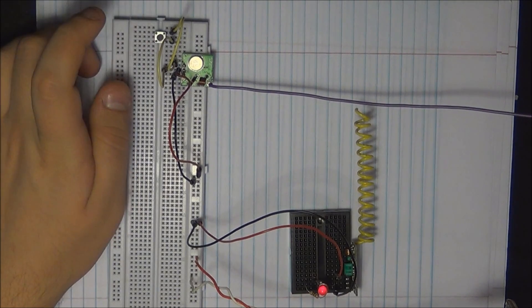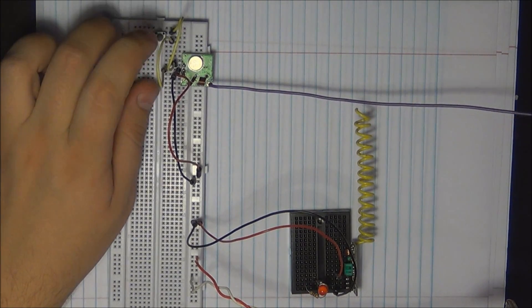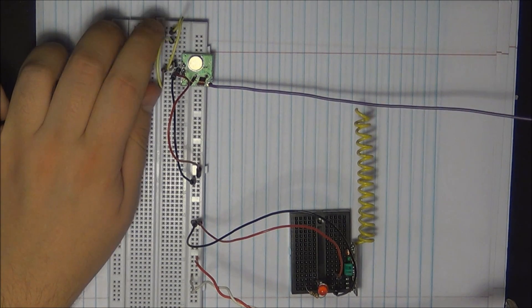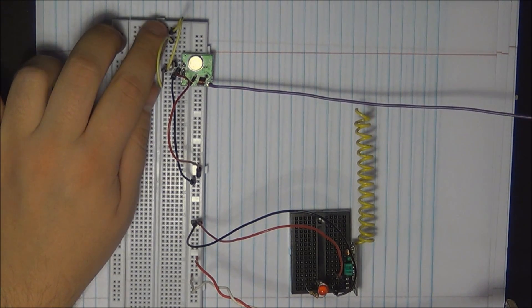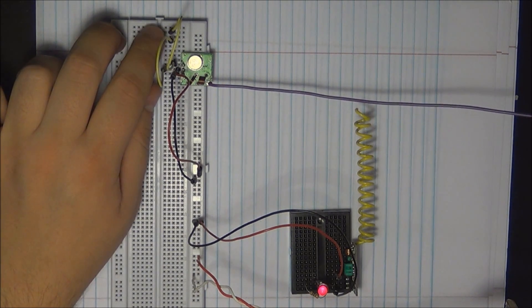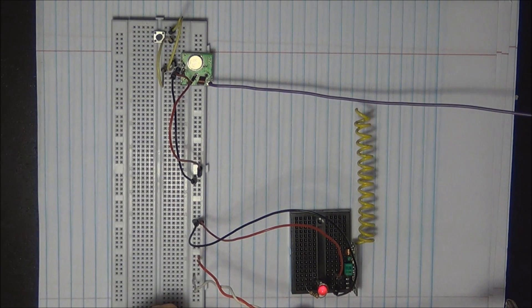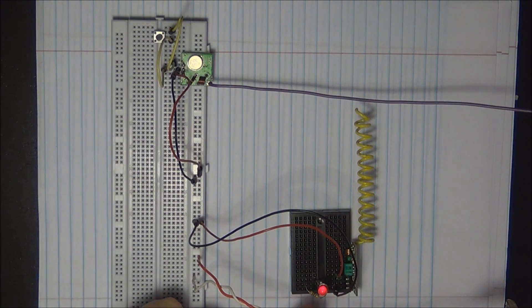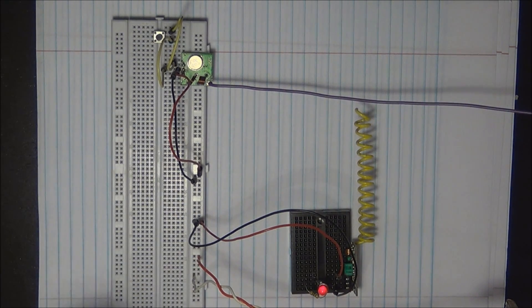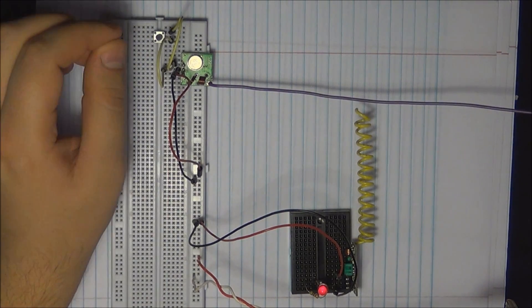So as you might have guessed if I press the button the LED is going to go on and off. So you're sending obviously a high to your receiver and it goes high and then when you don't send anything it just goes low. And as you might have noticed the LED does go on a little bit when you're not sending anything, so this is just noise that you can see on that channel.